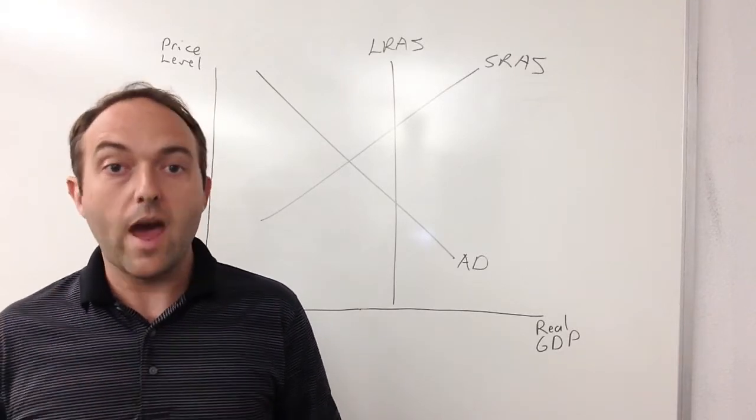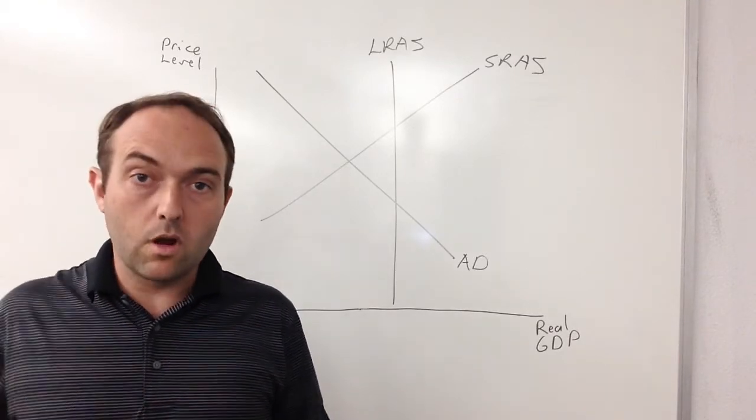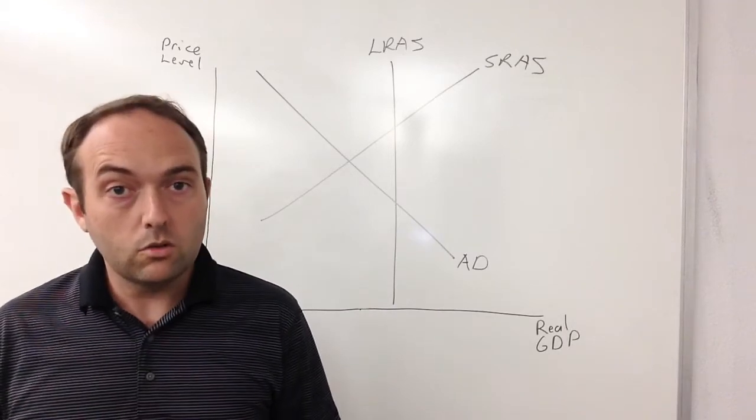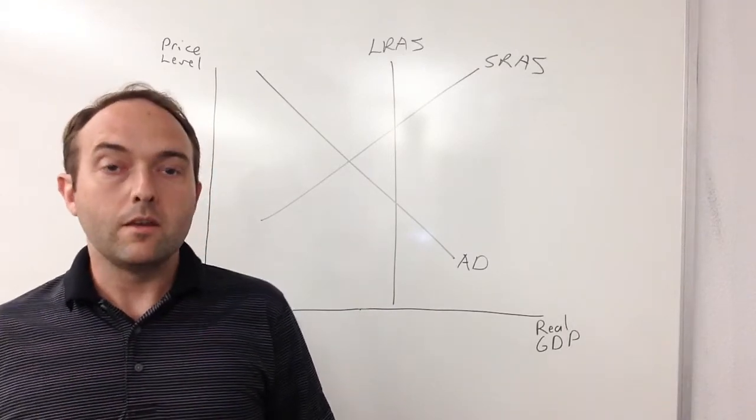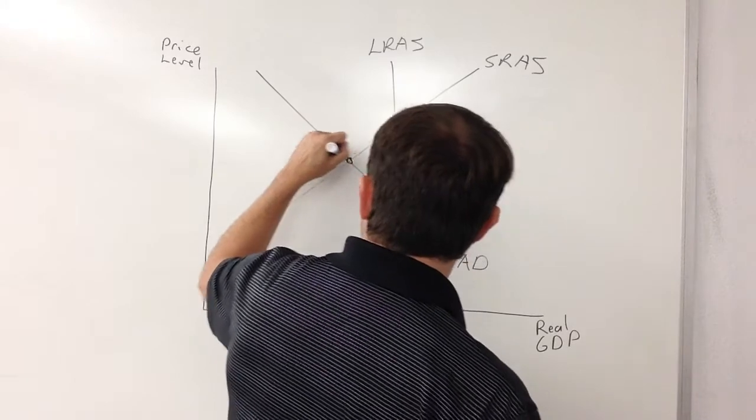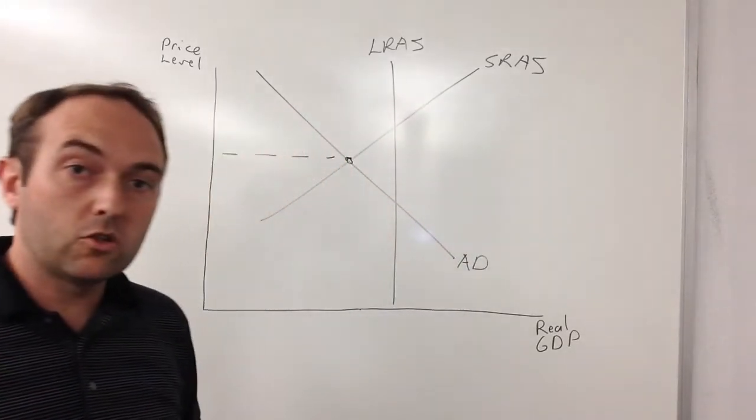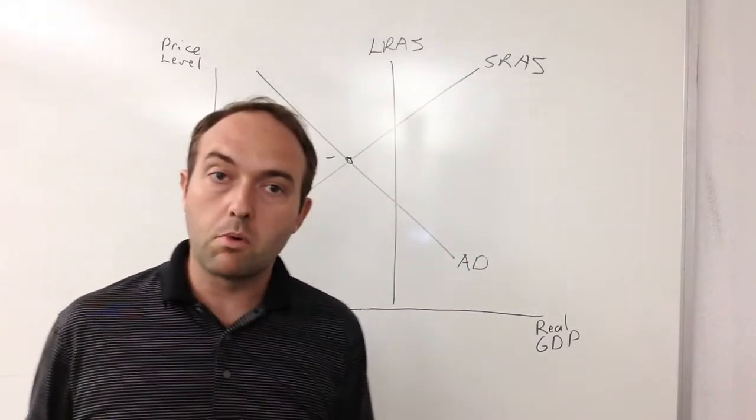When you look at the interaction of aggregate demand and short-run aggregate supply, you get two numbers. First thing you get is our actual price level of the country. This is often measured as our CPI, our consumer price index.